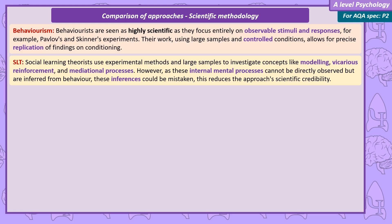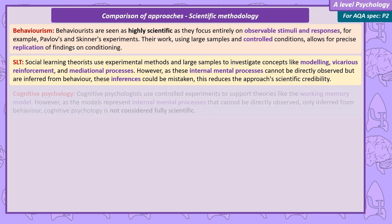Social learning theorists use experimental techniques with large sample sizes and laboratory conditions to investigate concepts such as modelling and vicarious reinforcement. However, social learning theorists also study mediational processes. As these are internal mental processes, they can't be directly observed and must be inferred from behaviour, meaning these inferences could be mistaken, reducing the scientific credibility of the approach.